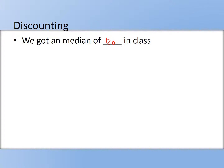Now let's work out the delta in this case. $100 today equals delta for two weeks times $120 in two weeks. That gives you delta equals 100 over 120, which is roughly 0.83.